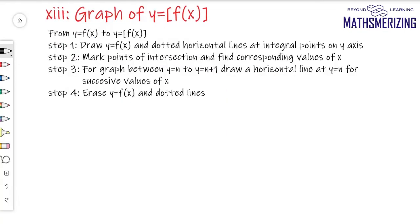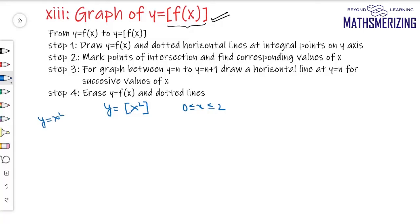Now we'll move to the 13th transformation, which is very important. This is y = ⌊f(x)⌋ — here I'm taking the greatest integer function around the whole function. This is one of the very important transformations. For example, I have to draw the graph of y = ⌊x²⌋ when x lies between 0 and 2. My basic graph is y = x², and I'll draw that between 0 and 2.